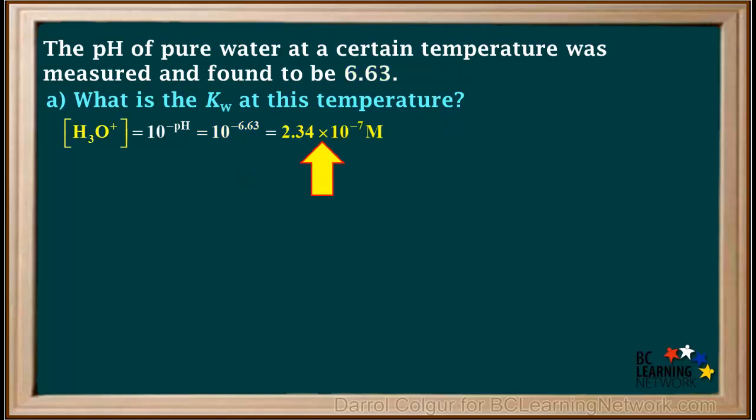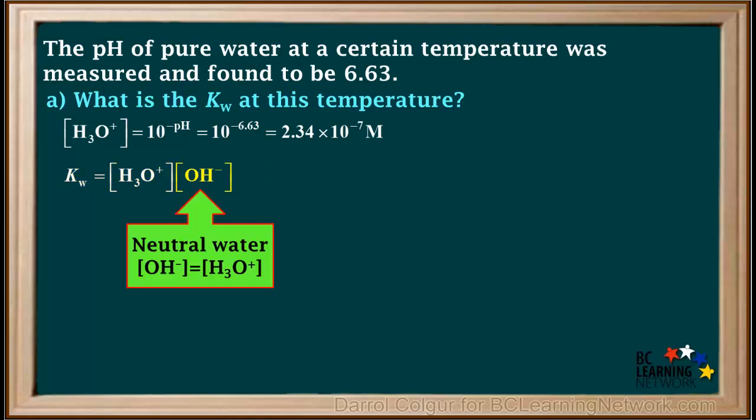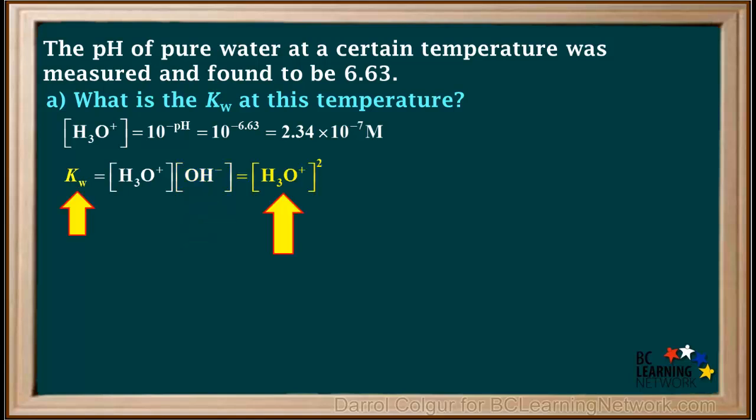This comes out to 2.34 times 10 to the negative 7th molar. Kw is the product of hydronium and hydroxide ion concentration. Because we're dealing with pure water, which is neutral, the concentration of hydroxide is equal to the concentration of hydronium. So we can substitute hydronium ion concentration in for hydroxide ion concentration, and we get that Kw is equal to the hydronium ion concentration squared, which is equal to 2.34 times 10 to the negative 7th squared, or 5.5 times 10 to the negative 14th.